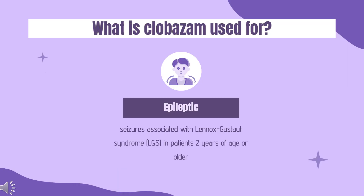What is Clobasam used for? Clobasam is indicated for the adjunctive treatment of seizures associated with Lennox-Gastaut syndrome (LGS) in patients 2 years of age or older.